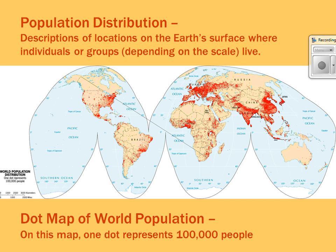This is a dot map where each dot represents 100,000 people — another way to look at where world population is distributed. Focus on China and East Asia, South Asia and India, Europe, and North America. There are also clusters in Brazil, Mexico, Western Africa — Nigeria specifically — and Southeast Asia has quite a bit as well.